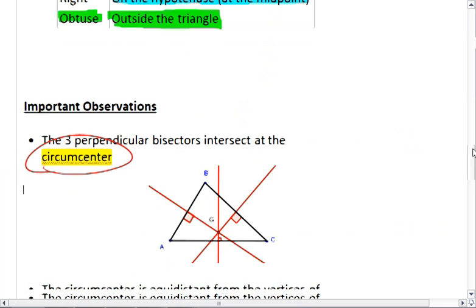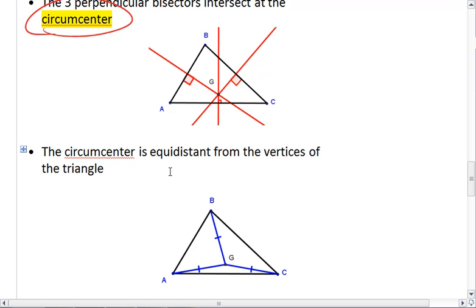That's our second important observation. The circumcenter is equidistant from the vertices of a triangle.